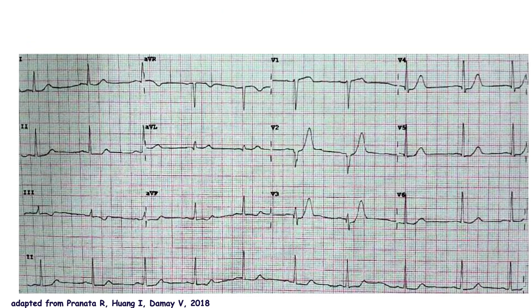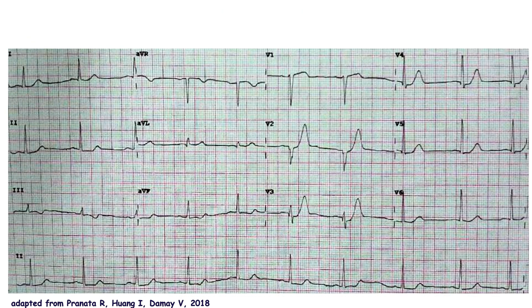It's an exception to the rule that up-sloping ST-segment depression is not ischemic. Maximal up-sloping ST depression is typically seen in lead V3.